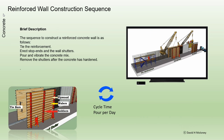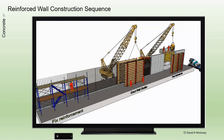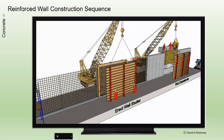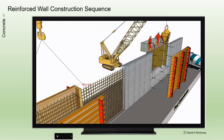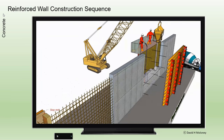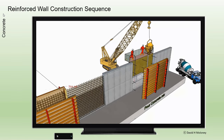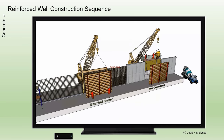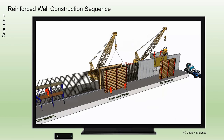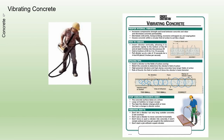Concrete wall construction. The sequence to construct a reinforced concrete wall is as follows: tie the reinforcement; erect stop ends and the wall shutters; pour and vibrate the concrete mix; remove the shutters after the concrete has hardened. Vibrators are used to compact the concrete.